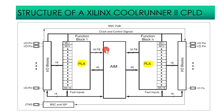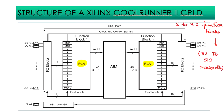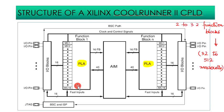This CPLD family is available in sizes from 2 to 32 functional blocks, equivalent to 32 to 512 macro cells. Each function block has 16 inputs from the AIM (Advanced Interconnection Matrix) and up to 40 outputs to the AIM. Each functional block PLA contains the equivalent of 56 AND gates in total.